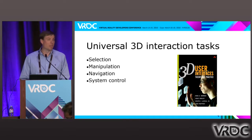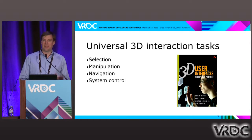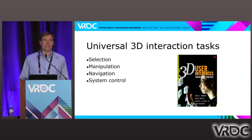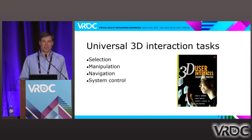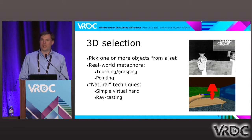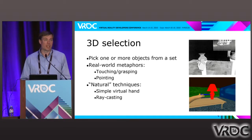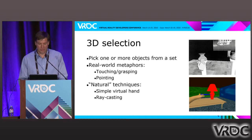Those universal tasks are: selection, manipulation, navigation, and system control. What I want to do today is really dive into the first one — selection — and use that as an example of how we can do innovation in 3D interaction. So what is 3D selection? You have a bunch of objects or targets in your scene, and you want to pick one or more of them in order to perform some action on it, or to shoot it or something along those lines.